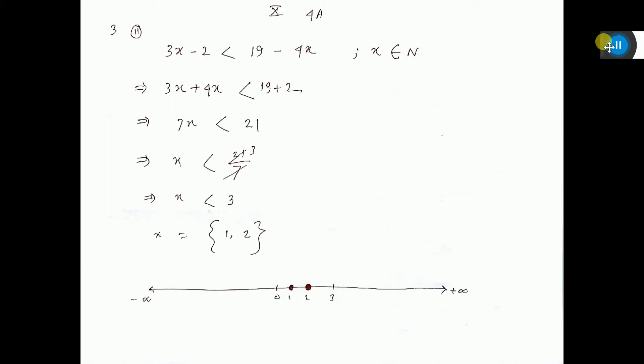Let me show you question 3 part 2. The question is 3x minus 2 less than 19 minus 4x where x element natural number.